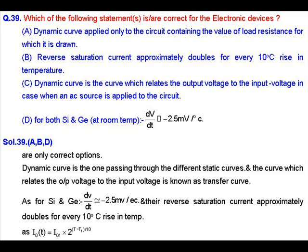For silicon and germanium, dV/dT can be approximated as −2.5 millivolts per degree Celsius, and the reverse saturation current approximately doubles for every 10 degrees Celsius rise in temperature. We also have the formula for reverse saturation current: I₁ = I₀ × 2 raised to the power (T₂ − T₁)/10. So the correct options here will be A, B, and D.